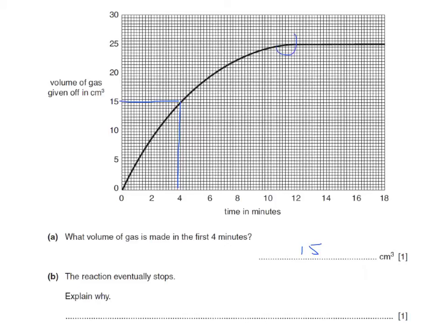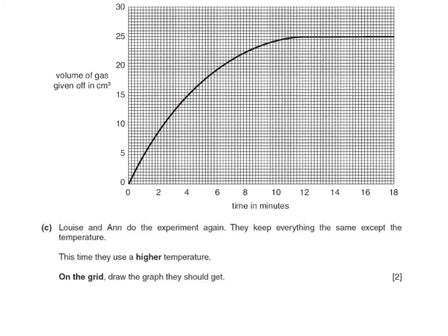The reaction eventually stops. Explain why. The reaction has stopped when the volume of the gas has reached about 25 cubic centimeters. This is because of one of two reasons. It would be because the acid has all been used up, or alternatively, because the magnesium has all been used up. Or, more generally, because one or other of the reactants has all been used up.